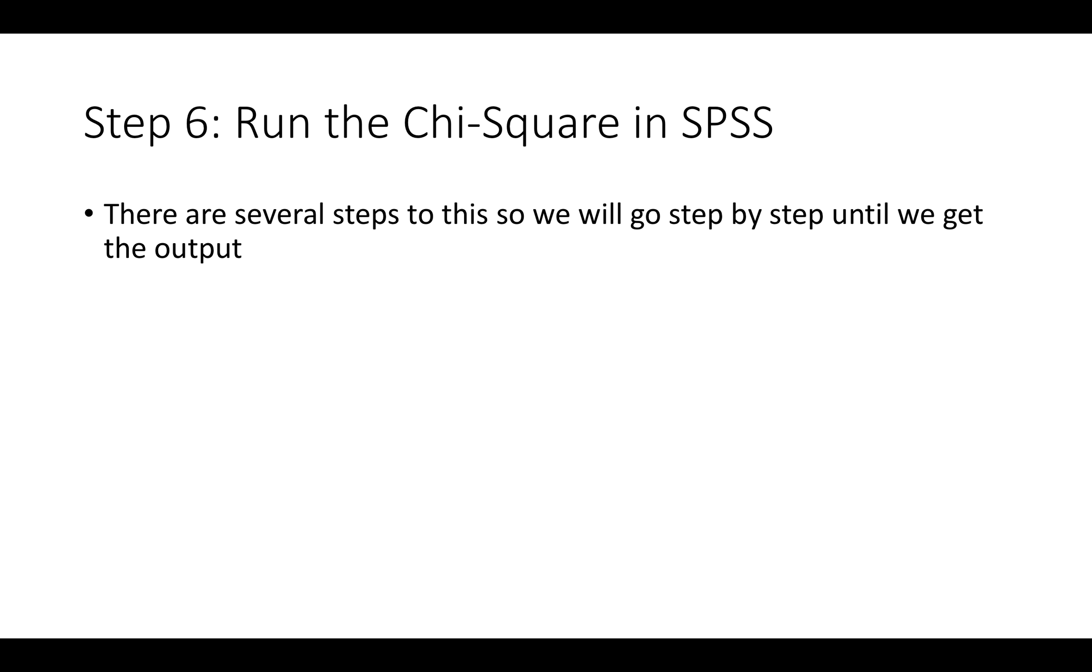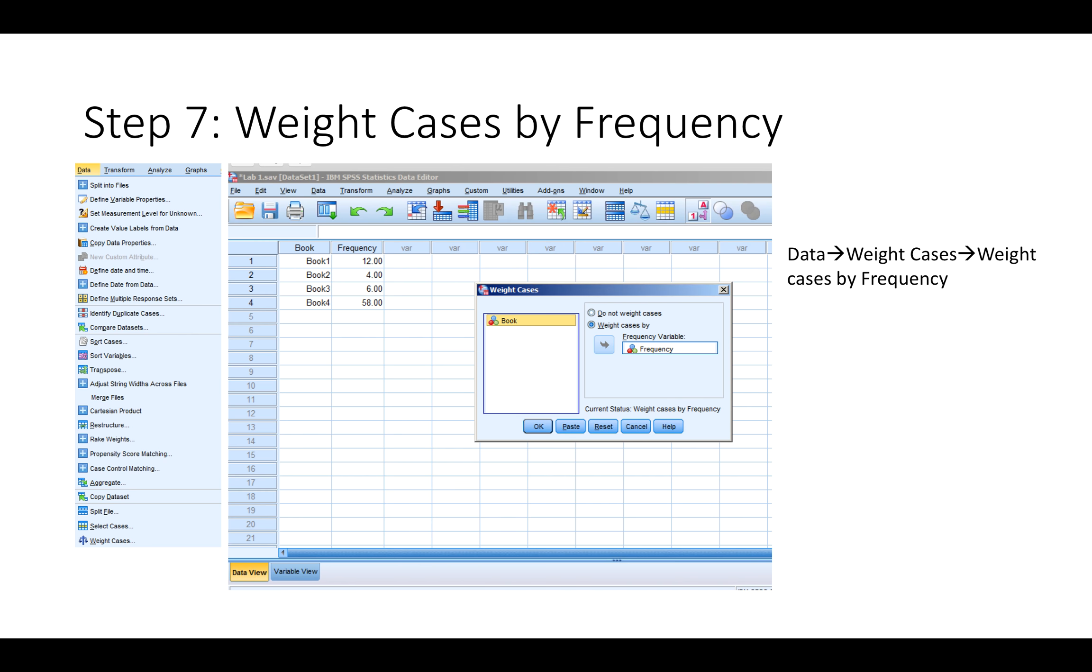Now we're going to run the chi-square in SPSS. There are several steps to this so we're going to go step by step until the output comes out. The first step is to weight the cases by frequency. You're in the data view tab. Now you're going to go to the top to data and go down to select weight cases and a box like this will pop up. You want to move frequency over to the weight cases by and click OK.